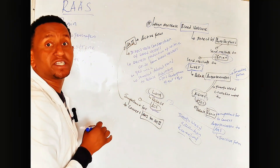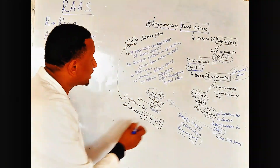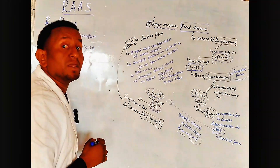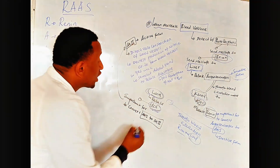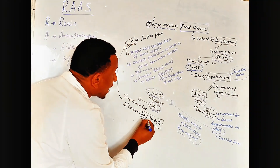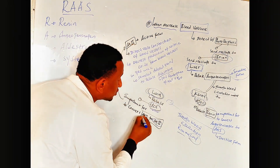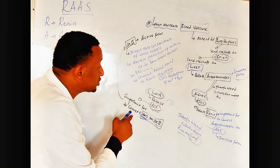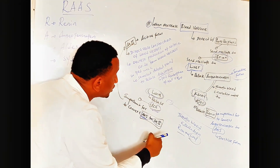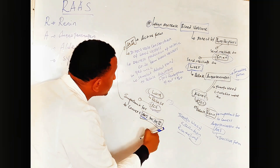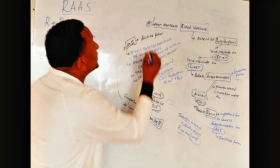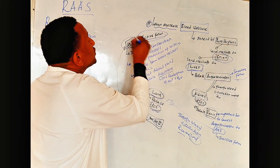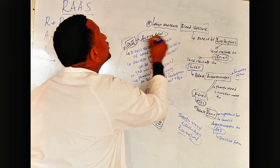In the lung, the ACE enzyme (Angiotensin-Converting Enzyme) converts angiotensin I to angiotensin II. Angiotensin II is the active form in the body.